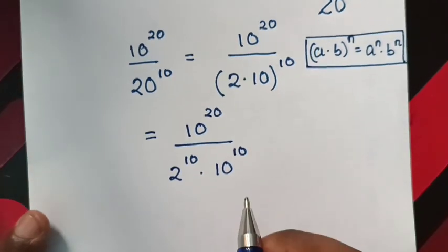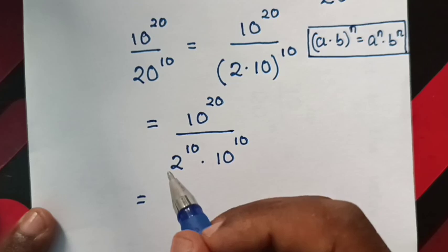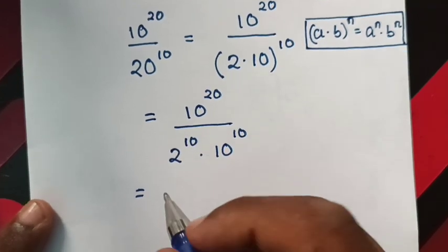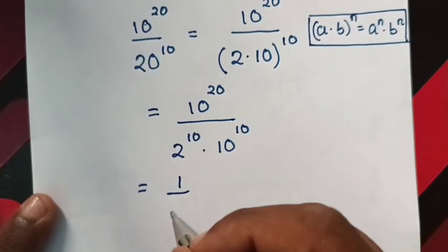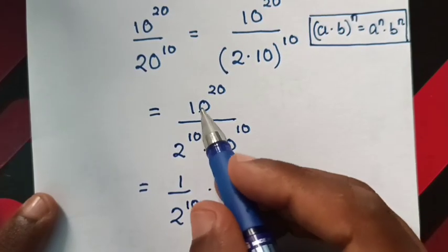This will be equal to, this denominator 2 power 10 is same as 1 over 2 power 10 times 10 power 20.